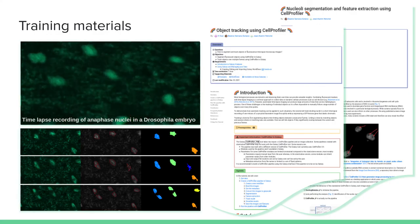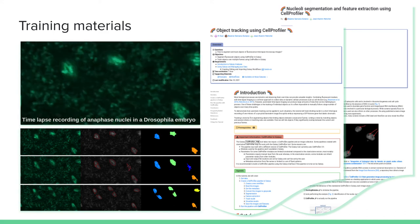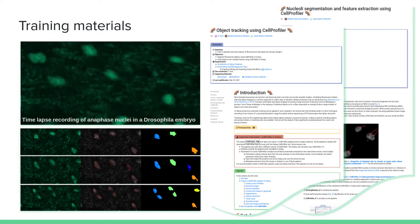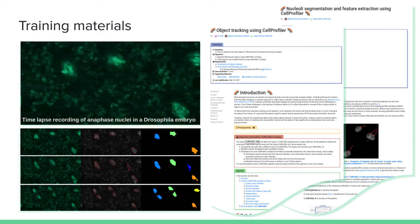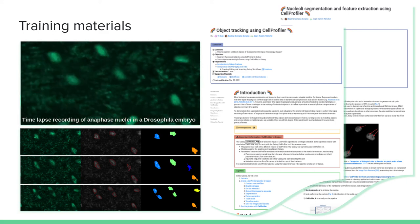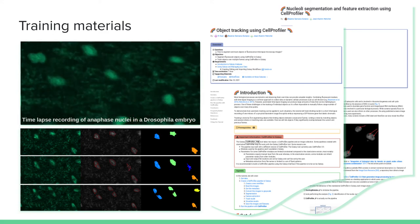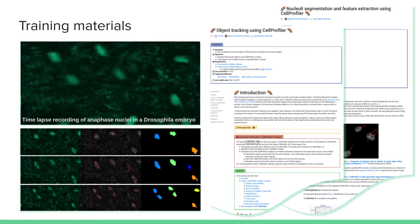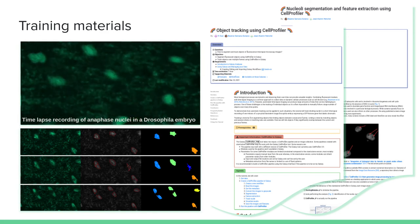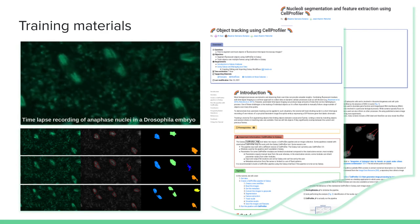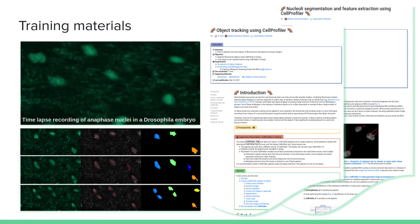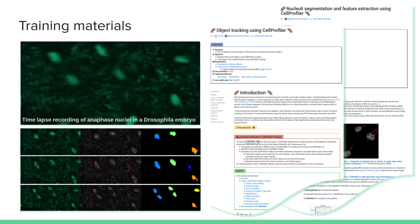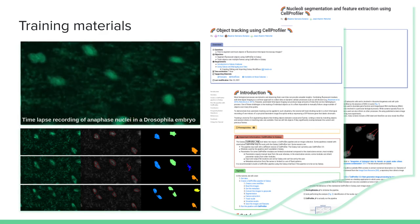Finally, I wanted to mention that there are also training materials in the GTN available to analyze this data. The first one is linked to the EOS Life project for nucleus segmentation and feature extraction using CellProfiler. The second one is object tracking using CellProfiler. You can see in the GIF that there is a cell dividing, and in the image below you can see the outcome of tracking these dividing nuclei.